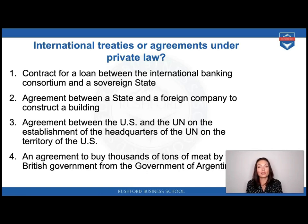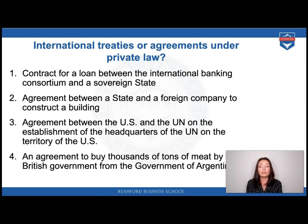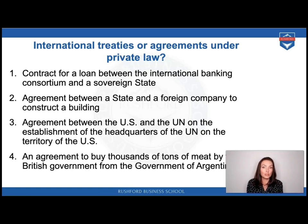In example three — an agreement between the United States and the United Nations establishing UN headquarters on US territory — the nature of the agreement involves sovereignty, immunities, and privileges of international institutions. This is not a commercial deal under private law; it concerns quite high-level relations. This is therefore a pure public international law matter.